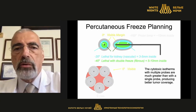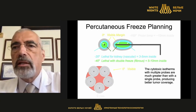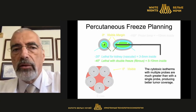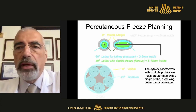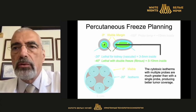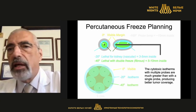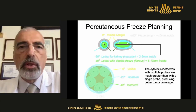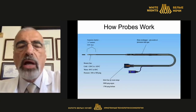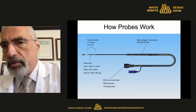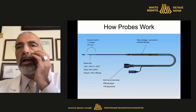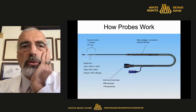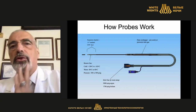Because at zero degrees, the cells remain viable. At minus 20, they start to die. At minus 40, they are completely dead. So everybody of you knows the same things, but you will see where I want to go with this kind of introduction.